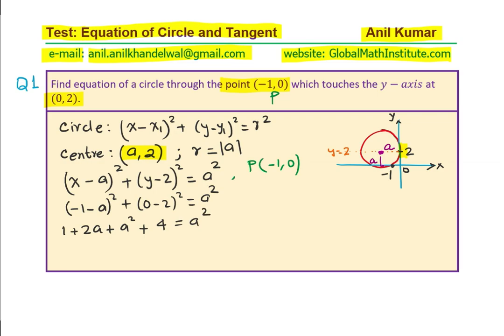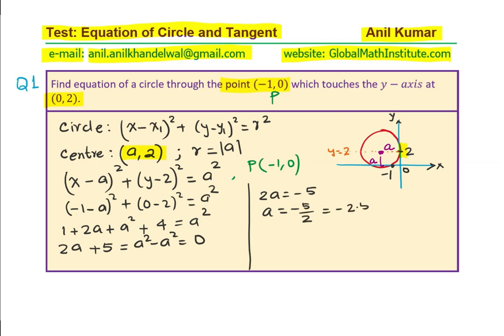Now in this equation, a² and a² cancel, so we have 2a + 5 = 0. Therefore 2a = −5, giving a = −5/2, or −2.5. That becomes the value of a in this particular case. Now since we know a, we can write down our equation.